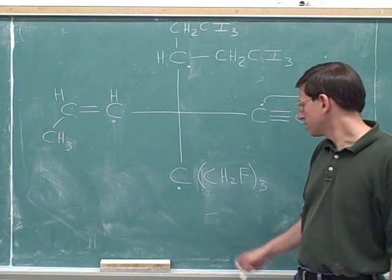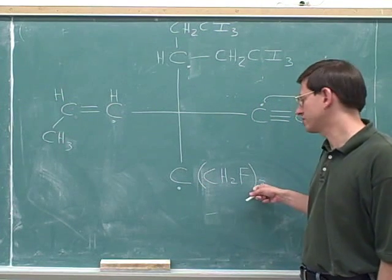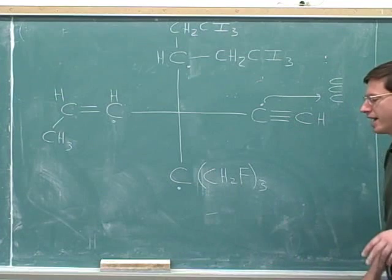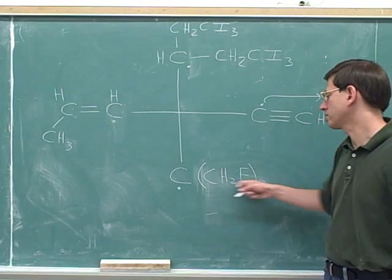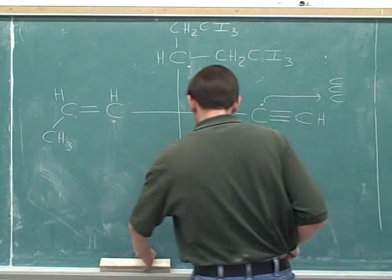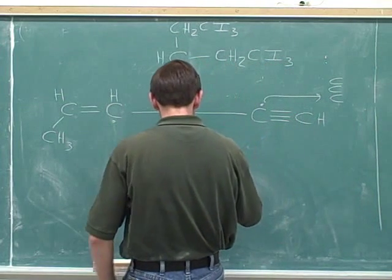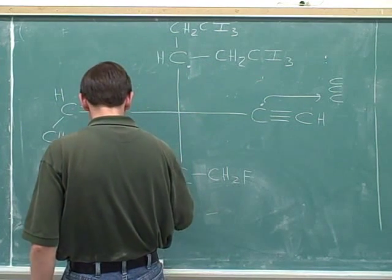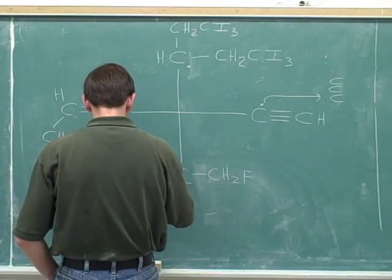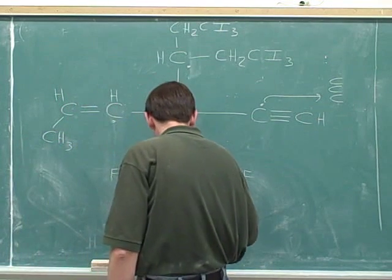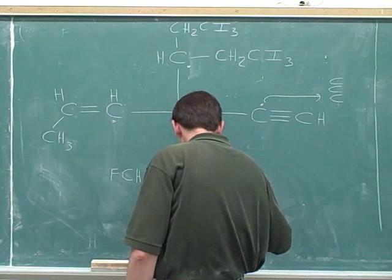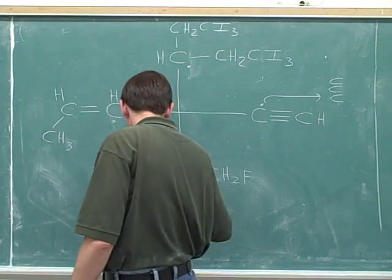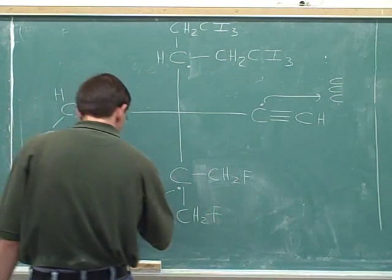This carbon is bonded to three of these groups, so it's bonded to three carbons. This is also bonded to three carbons. This carbon is bonded to three carbons — but if that's not obvious, we should actually write out this condensed notation. Always expand condensed notation if you're finding it confusing. Now that confirms that this carbon is attached to three carbons.